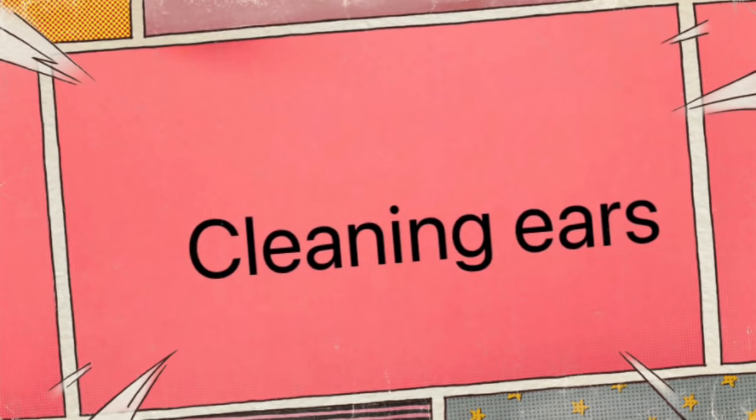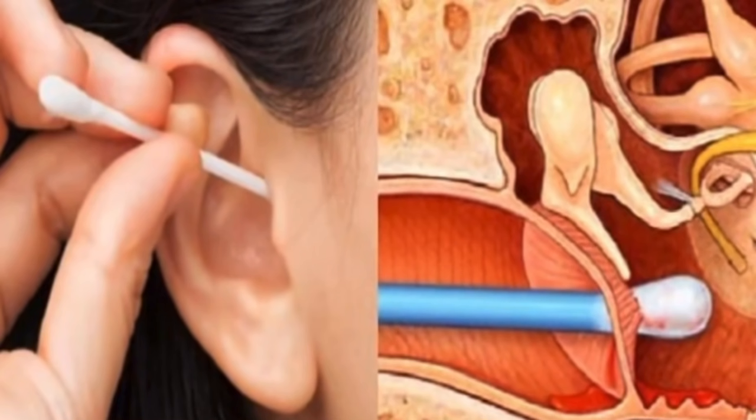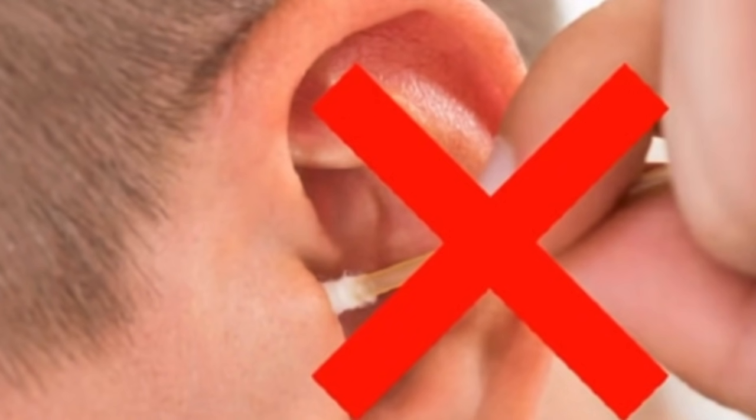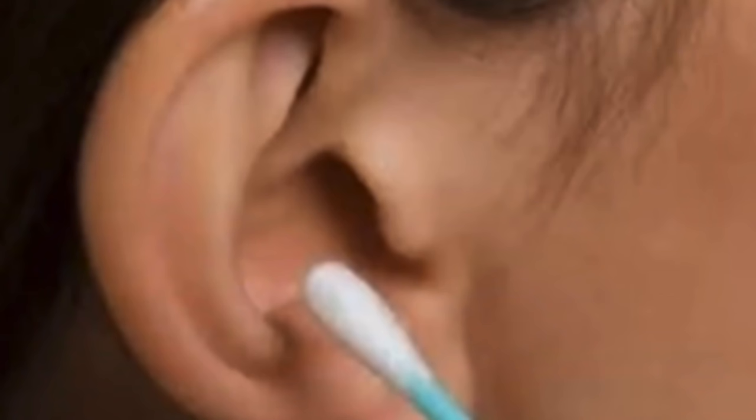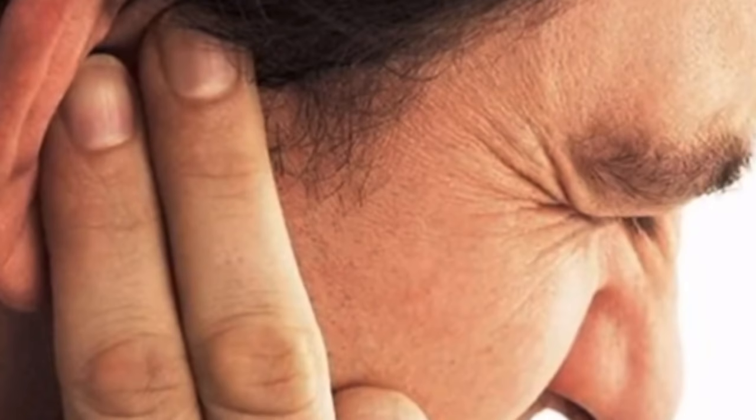Do your ears feel clogged up too? Do you know that using cotton swabs is not a safe way to remove the wax? Cotton swabs may push wax deeper into the ear canal. Use cotton swabs only on the outside of the ear, or better yet, try wiping the area with a warm damp cloth.